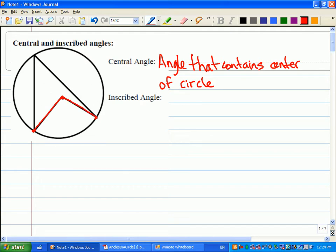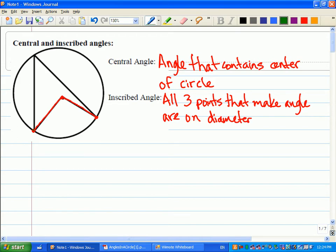The inscribed angle is very similar. It has to touch the sides of the circle, but this time all three points that make the angle are on the circle. So they're on the diameter. The inscribed angle here is this one, two, three.